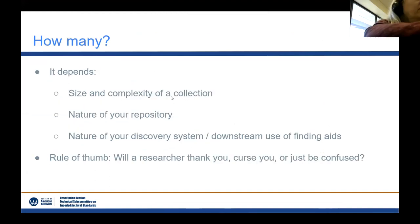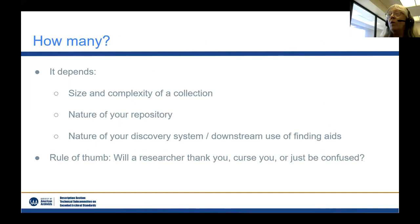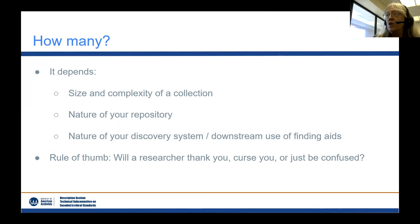The next basic question is: how many access points do I need? The answer, like most things in archives, is it depends. It's going to depend on the size and complexity of the collection. If it's one folder, you probably need just two or three — the who, the what, and maybe a subject term. If it's a huge collection, you're going to want a lot more and think about all the different kinds of researchers that might use it. It's also going to depend on the nature of your repository.